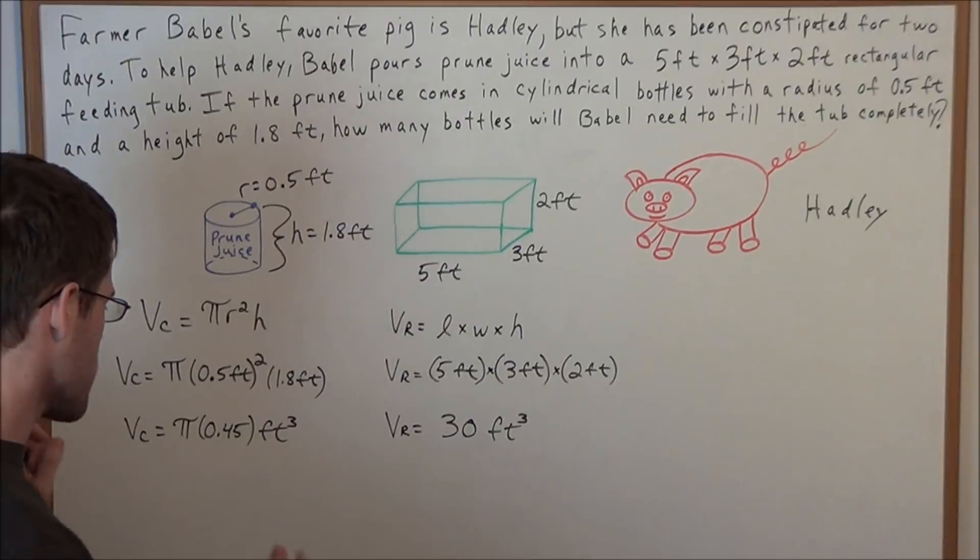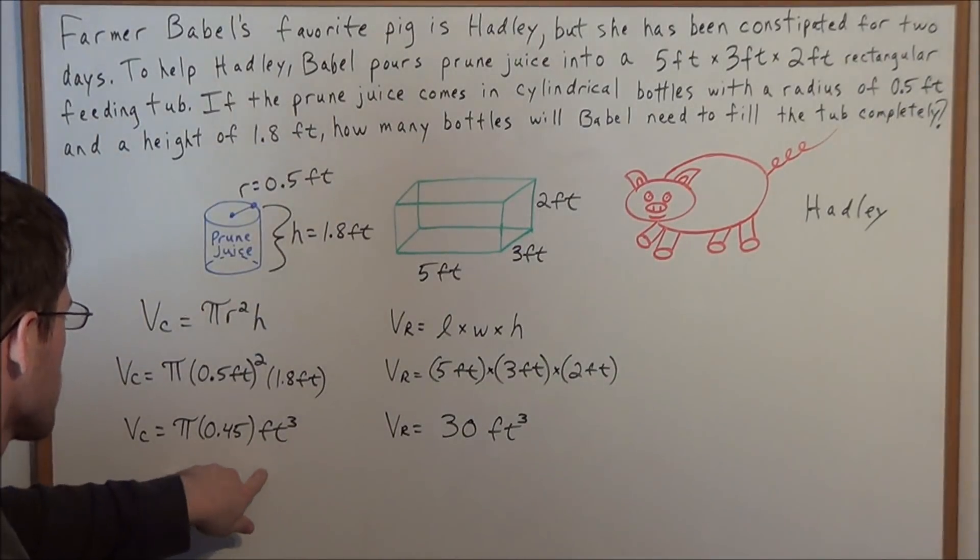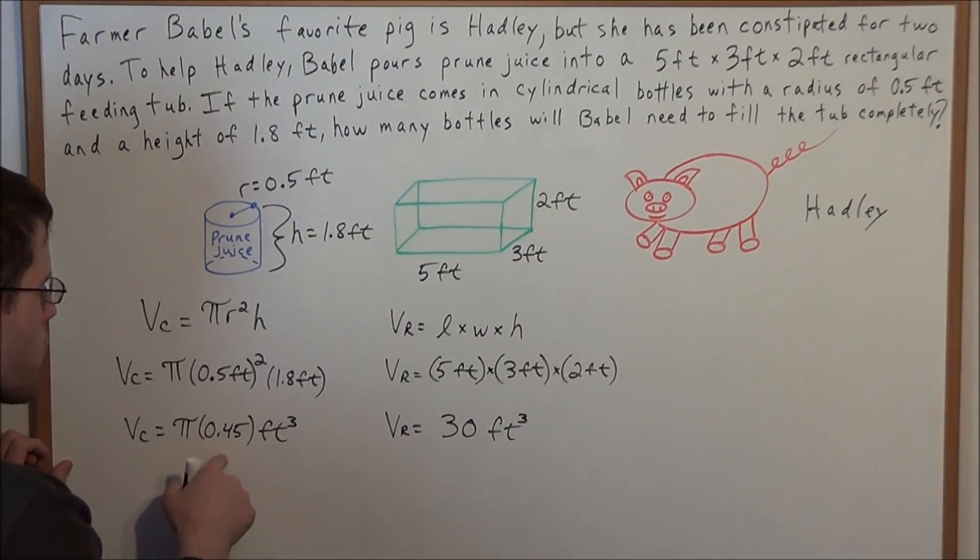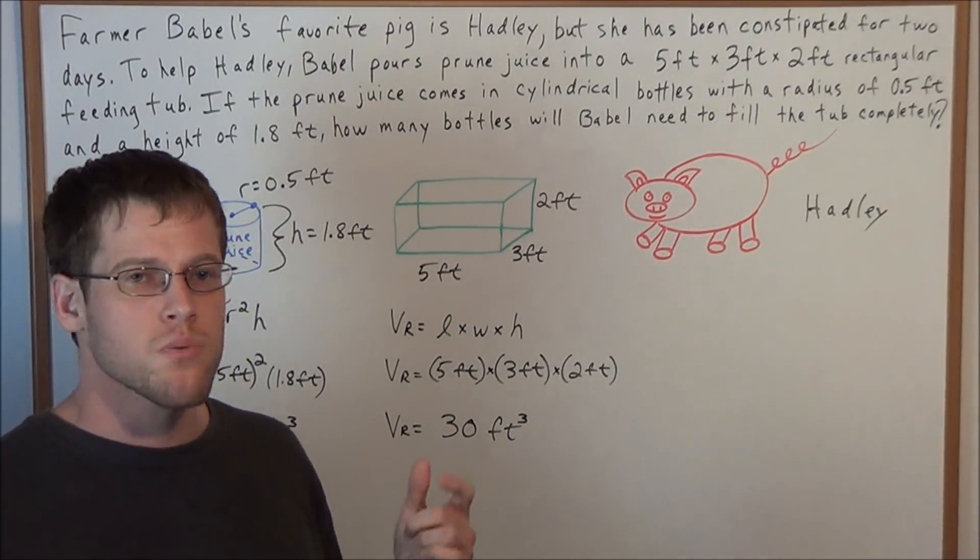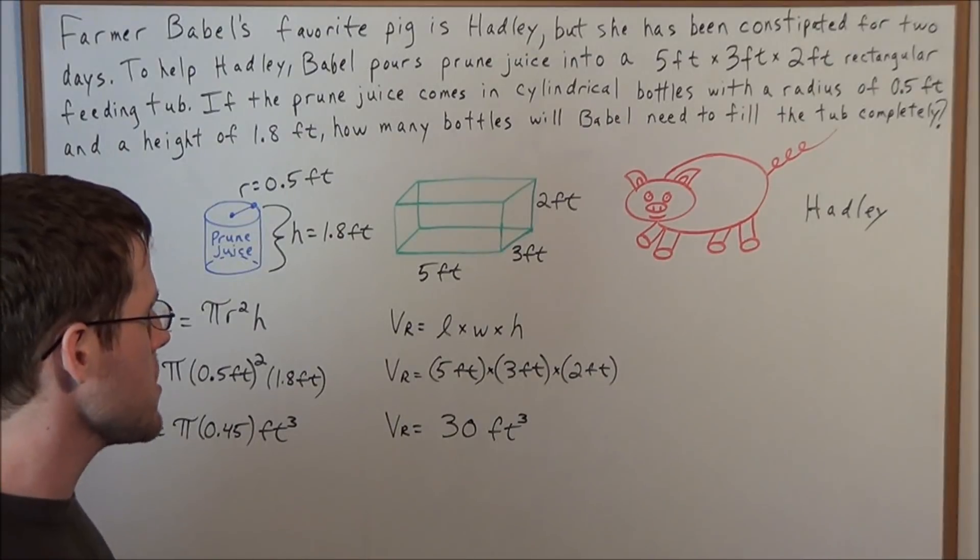Your calculator will work all of this out for you, so you should get 0.45 pi cubic feet. So now the question, how many bottles will Babel need to fill this tub completely?